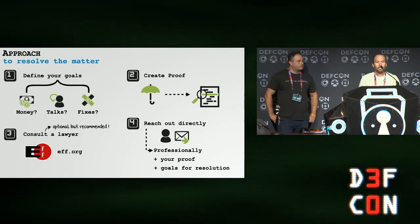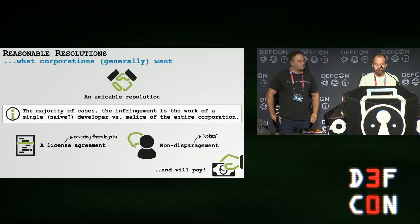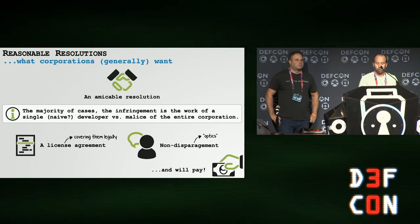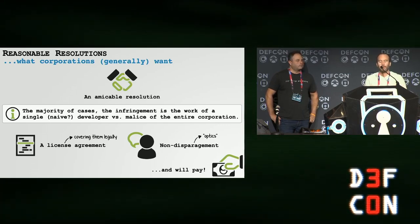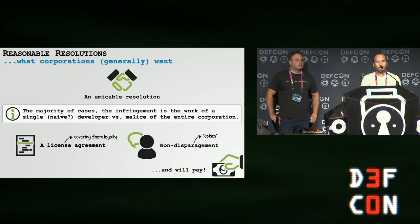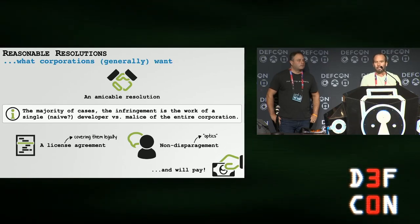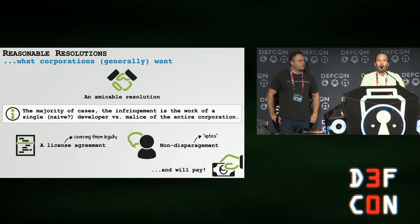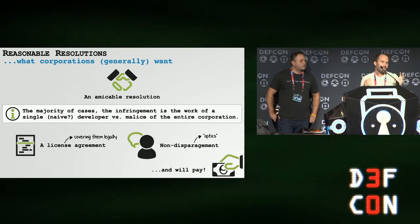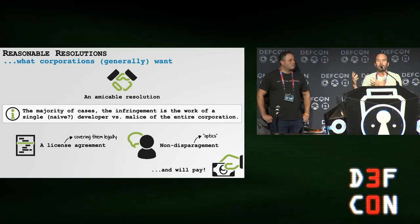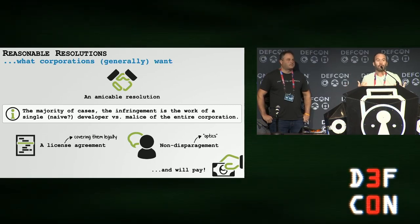It's also wise to reach out professionally versus flaming them on Twitter. It's good to know what corporations want — generally an amicable solution. This was something of a learning experience: the majority of cases were a result of a single, arguably naive developer reverse-engineering and stealing the code from Oversight, rather than the malice of an entire corporation. Generally what happened was the developer had been tasked to implement a feature, went out, couldn't figure it out, reverse-engineered tools, and then no one asked them where they got it from.